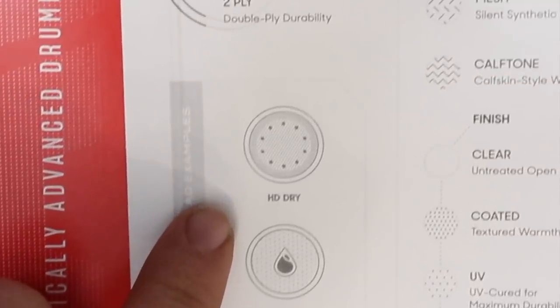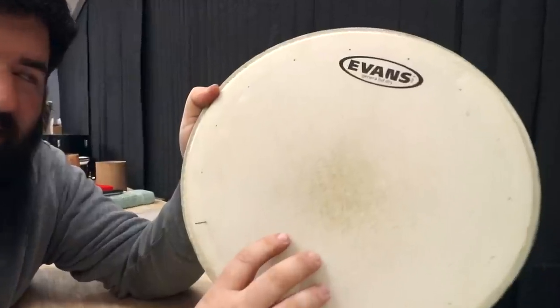Now, Evans has been doing drum heads that have what they call dry vents in them for a long time. They're primarily for snare drums. The vents are very small, and the idea is to release some air from inside of the drum to kind of dry out the sound, alleviate some overtones, and sort of focus the attack and the clarity and everything.